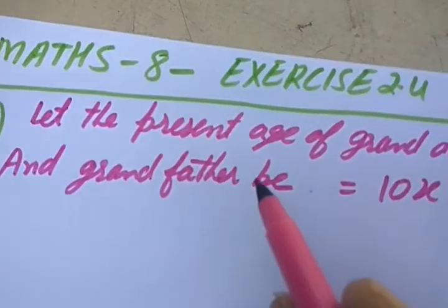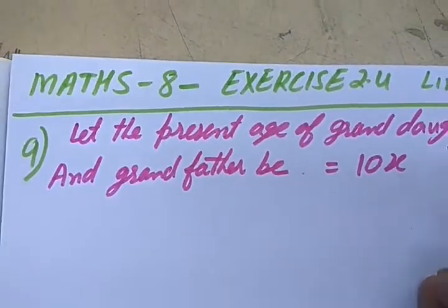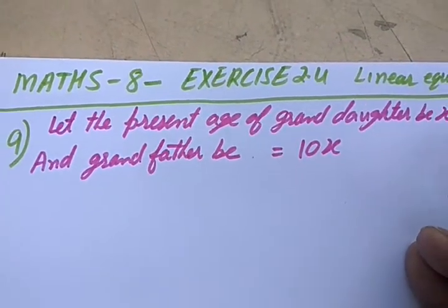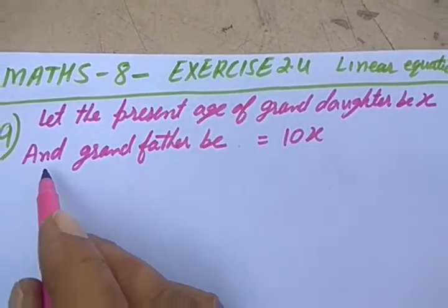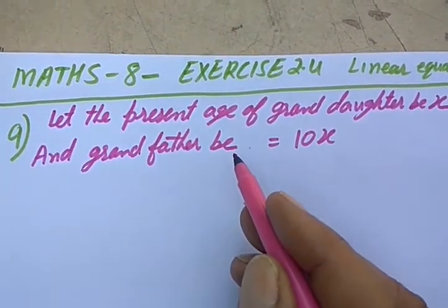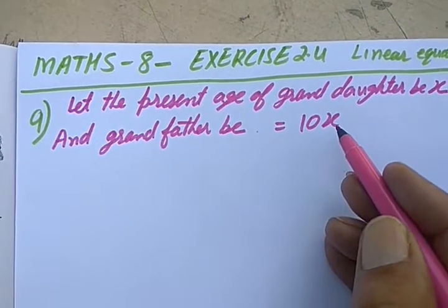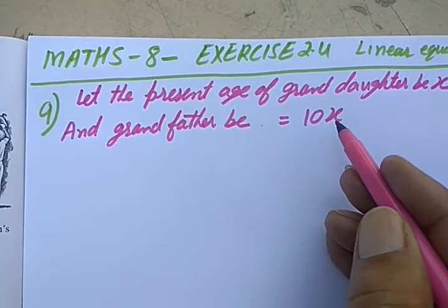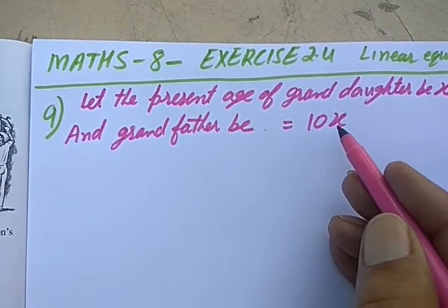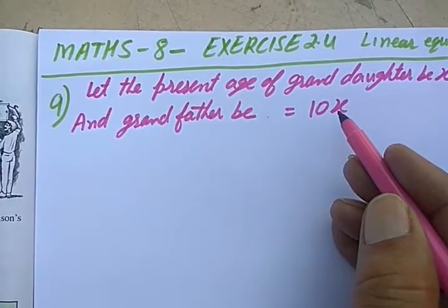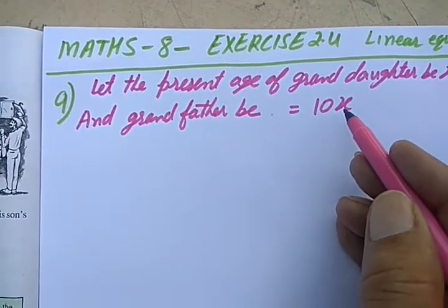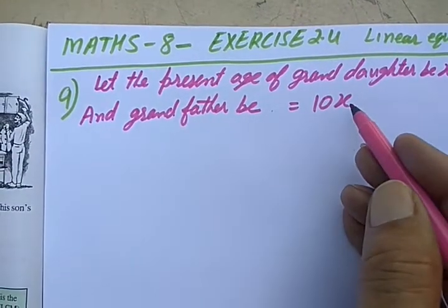Let's take granddaughter's present age as X years and grandfather's present age to be 10X years, because he is 10 times older than the granddaughter. Now further he says he is also 54 years older than her. That means the difference of their ages is 54 years.